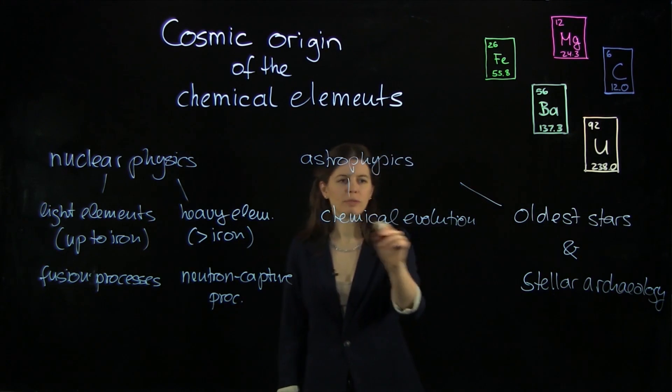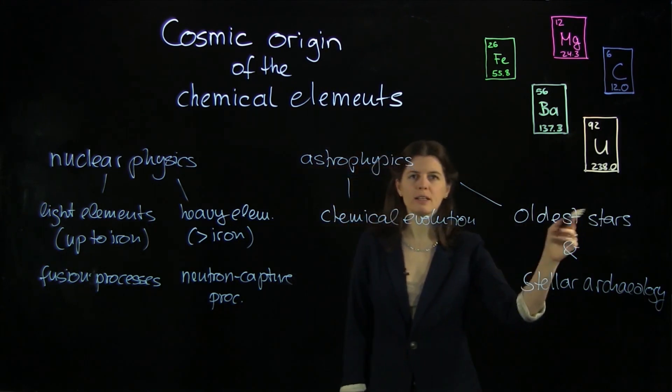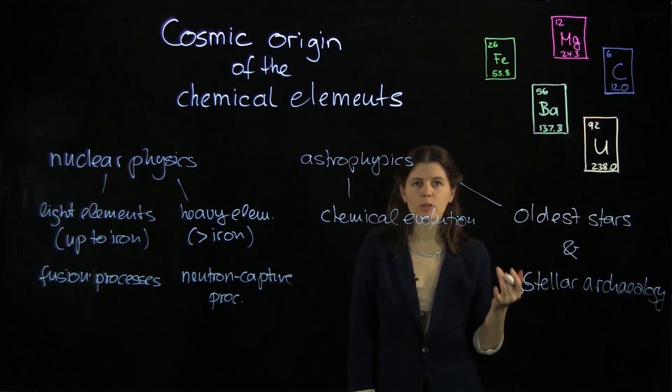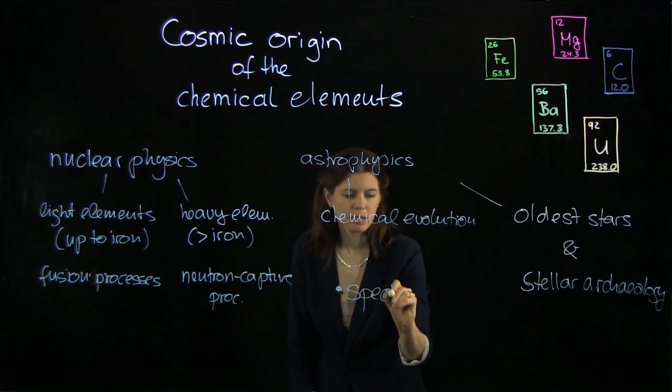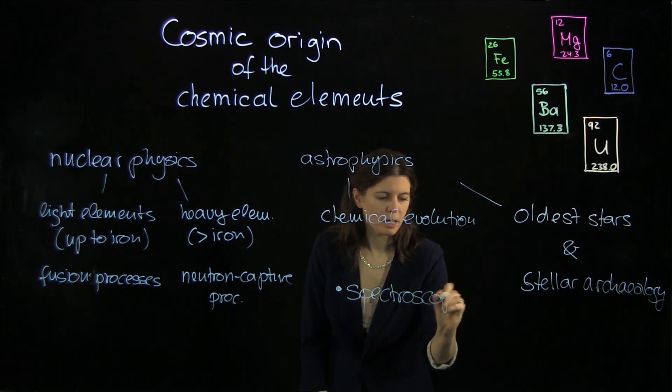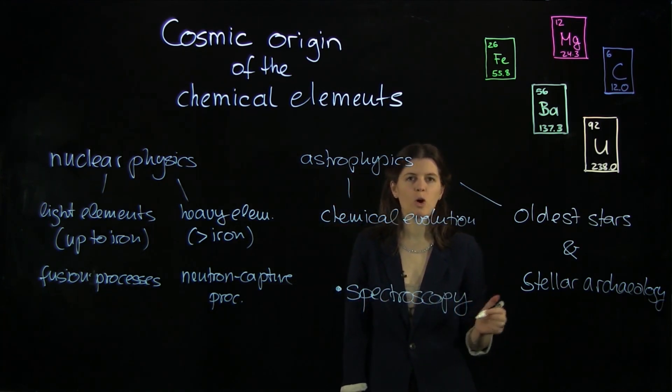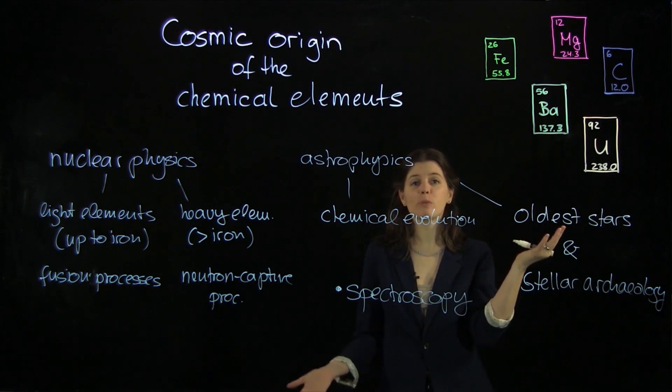And in order to study chemical evolution with old stars, we actually need to use a scientific method called spectroscopy. So we're also going to look at spectroscopy and how that works, observing all the little stellar rainbows.